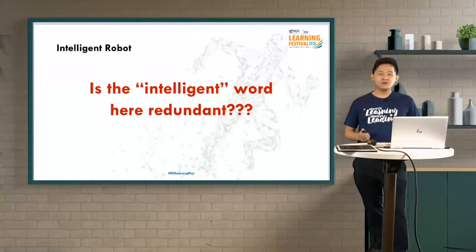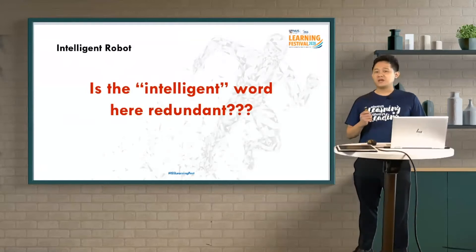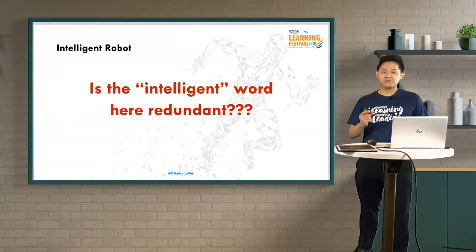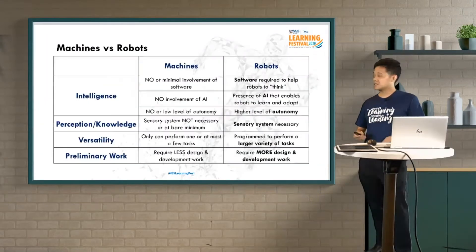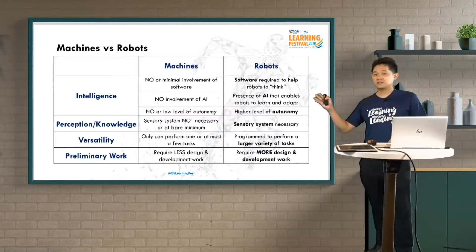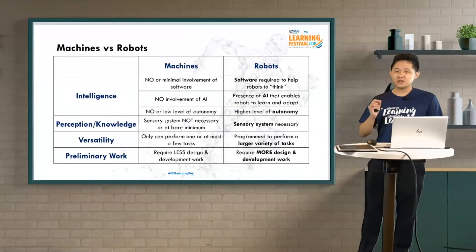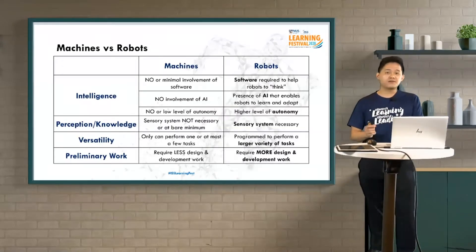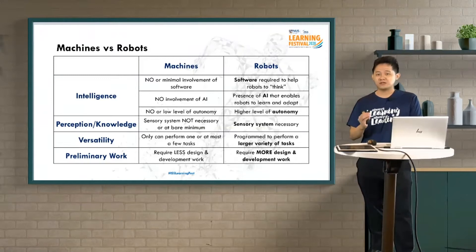So, is the word 'intelligent' in 'intelligent robot' redundant? Many of you have been thinking: why do I need to put 'intelligent' in front of 'robot'? My answer is: it is actually redundant. At ISS, by default, robots are intelligent to us — in terms of using software, utilizing artificial intelligence algorithms, and ensuring the robot has a high level of autonomy. In these aspects, we define robots as intelligent by default.